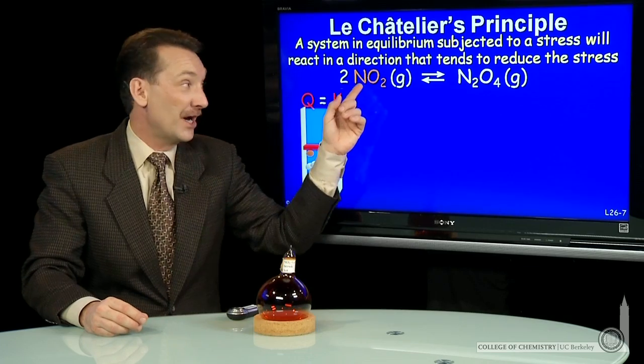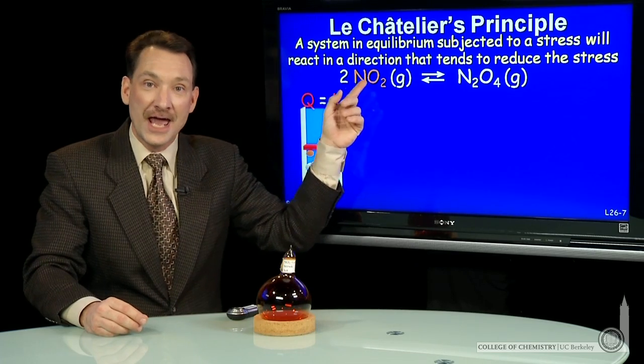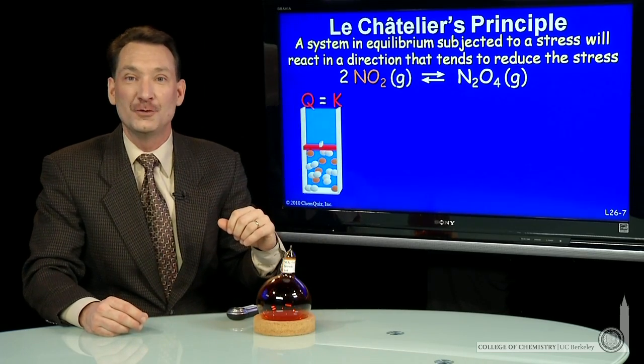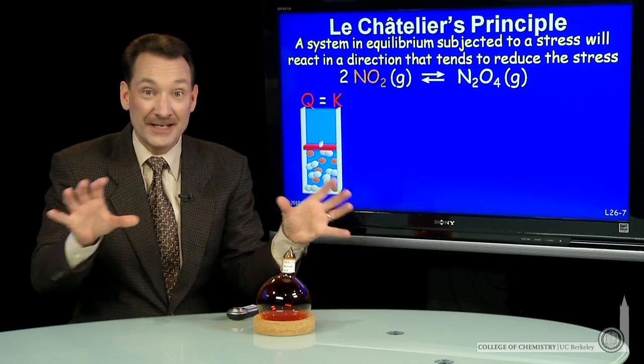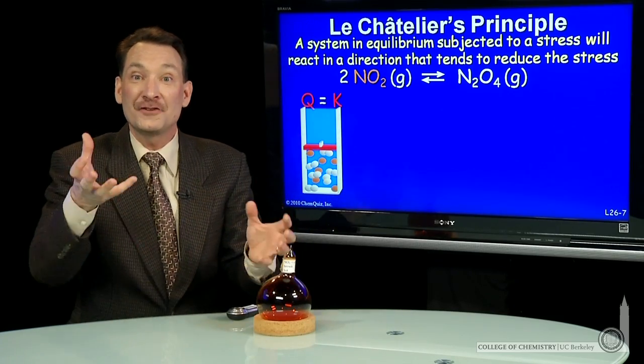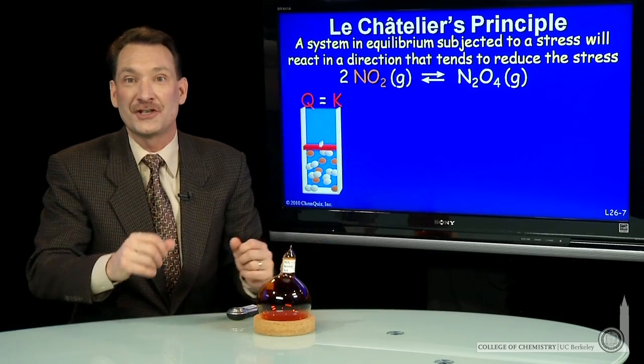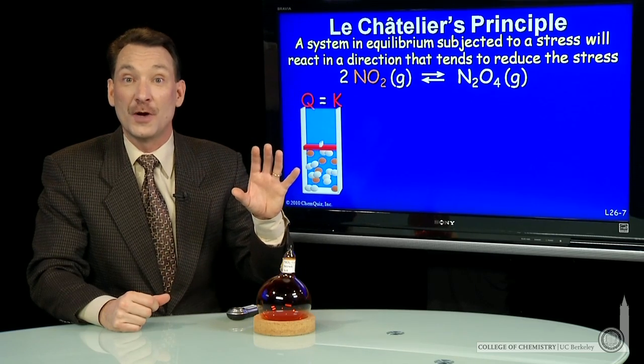N2O4 dimers are breaking down to form NO2, and NO2 monomers are forming N2O4. The dynamic nature of that equilibrium allows the equilibrium to adjust if there's a change in the system, and it does so in a logical way.